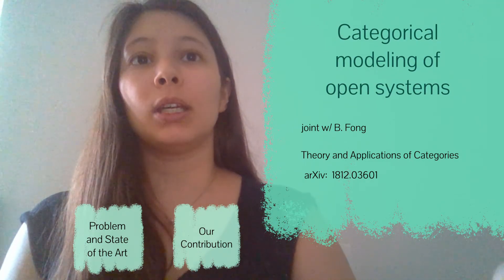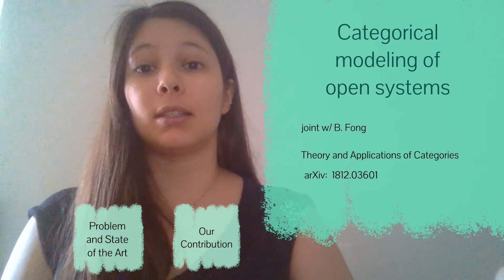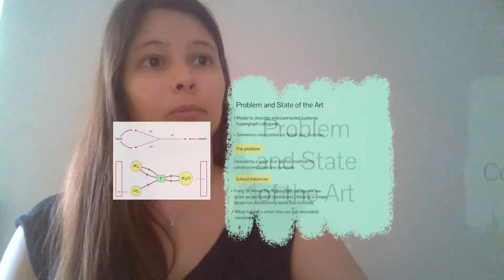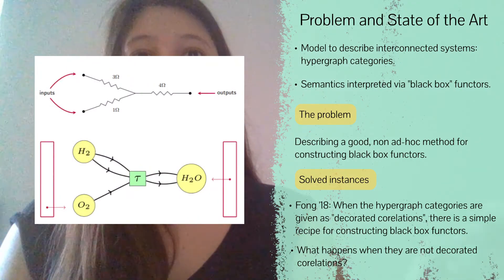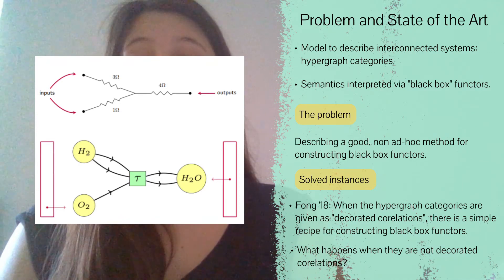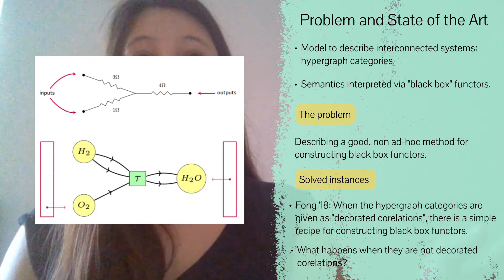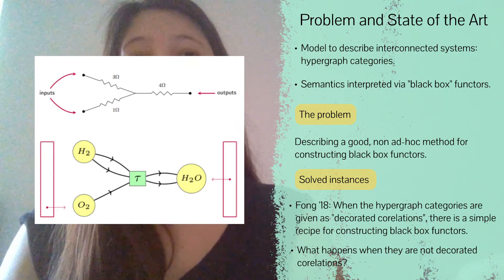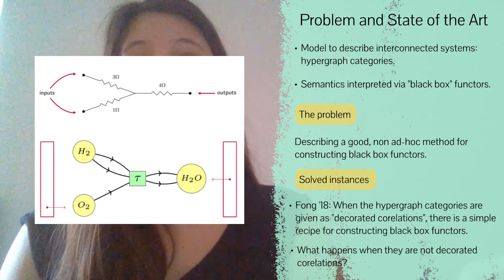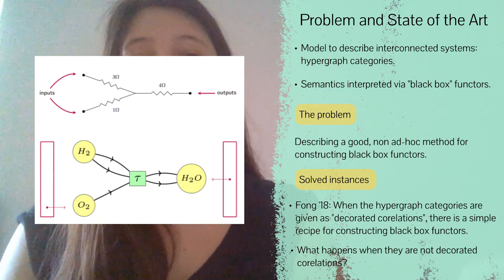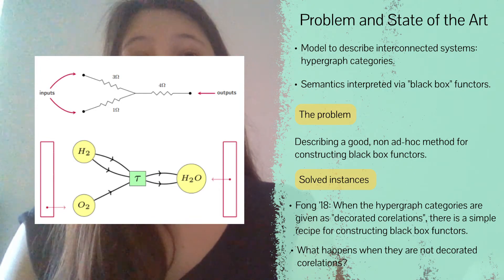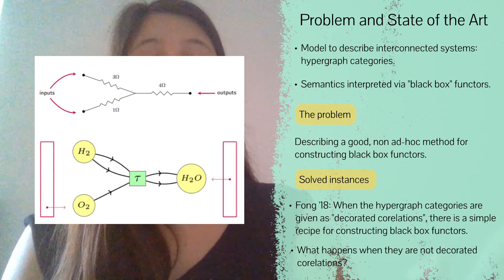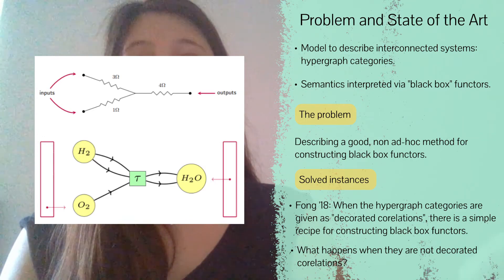Finally, I'm also interested in using category theory in a more interdisciplinary manner to model things in other sciences. In this direction I have a project on the categorical modeling of open systems together with Brendan Fong. Open systems, which are sometimes called interconnected systems, include things like electrical circuits and chemical reaction networks as seen in the picture. We can use categories to model these, and the most common way is to use hypergraph categories. A hypergraph category records all the syntax of the system, but the semantics have to be interpreted externally through what are called black box functors. The hypergraph structure can be quite complicated, making constructing these semantic interpretation functors highly non-trivial. The goal is to find a good non-ad-hoc method for constructing black box functors.